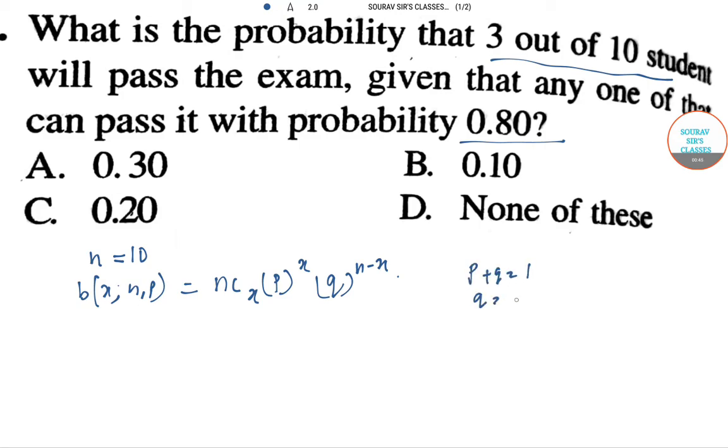So q we can find out: 1 minus p. And x is 3 out of 10 students. So over here n equals 10, x equals 3, probability p is given 0.80, and q will be 1 minus 0.80 which will be 0.20.